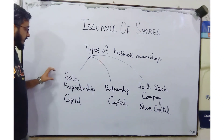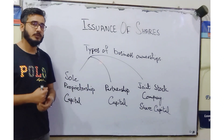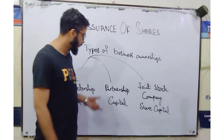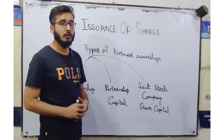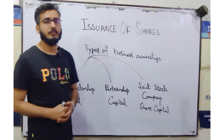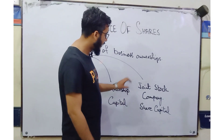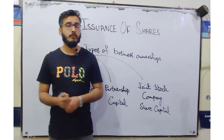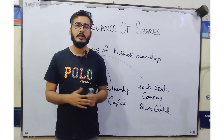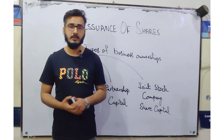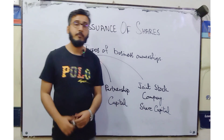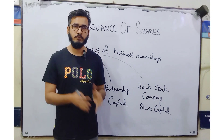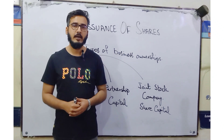We have studied sole proprietorship, where we just use the word 'capital' for the investment of the owner. Then in partnership, we record partners' capital as the investment of the partners. Then in joint stock company, it is the company where the public subscribe via shares and invest. So we record it by the name of 'share capital,' where all investment made by the owners is pooled into one account.